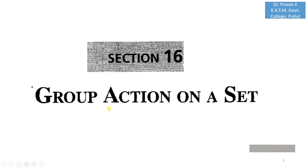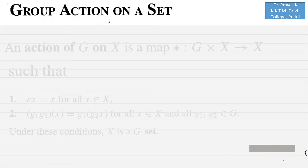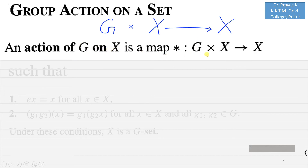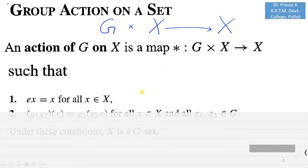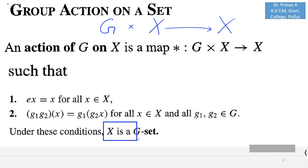Hello everyone. Today we will see Section 16 on group action on a set. Let G be a group and X be a set. An action of G on X is a map star from G cross X to X such that two conditions hold: first, E·x = x for every x in X, where E is the identity element of G; and second, (G1·G2)·x = G1·(G2·x). Under these conditions, we say that X is a G-set.